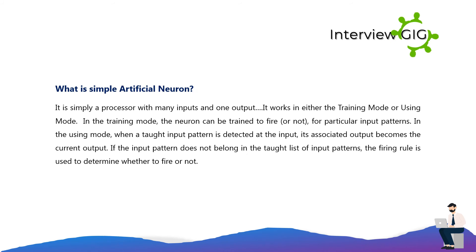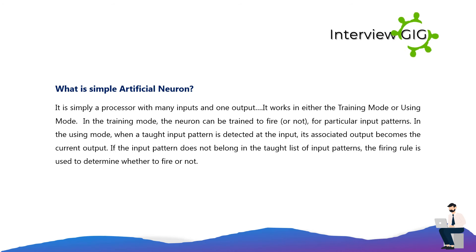What is a simple artificial neuron? It is simply a processor with many inputs and one output. It works in either training mode or using mode. In the training mode, the neuron can be trained to fire, or not, for particular input patterns. In the using mode, when a taught input pattern is detected at the input, its associated output becomes the current output. If the input pattern does not belong in the taught list, the firing rule is used to determine whether to fire or not.